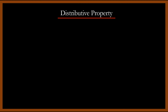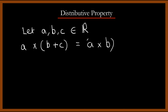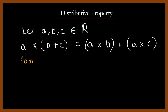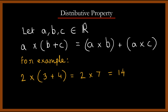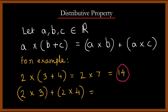The distributive property is a very important property that involves two operations: addition and multiplication. To understand the distributive property, we will take three variables. Suppose A, B and C are real numbers, where A multiplied by (B plus C) is equal to A multiplied by B plus A multiplied by C. It means that the sum of two or more numbers multiplied by any number is equal to the sum of the product of each addend. For example, 2 multiplied by (3 plus 4) is equal to 2 multiplied by 7, because 3 plus 4 is 7, which equals 14. Also, 2 multiplied by 3 plus 2 multiplied by 4 is equal to 6 plus 8, which equals 14. Therefore, the distributive property is true because both results are the same.